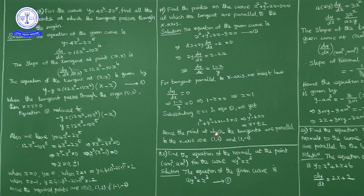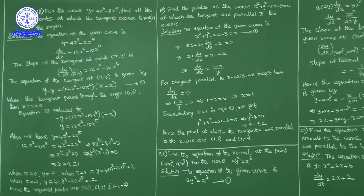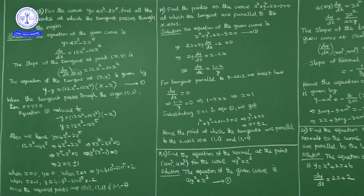For the tangent to be parallel to the x-axis, dy/dx = 0. So (1 - x)/y = 0, giving 1 - x = 0, thus x = 1. Substituting x = 1 into the curve: 1 + y² - 2 - 3 = 0, so y² - 4 = 0, (y - 2)(y + 2) = 0, giving y = 2 and y = -2.